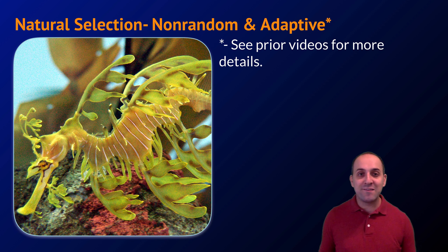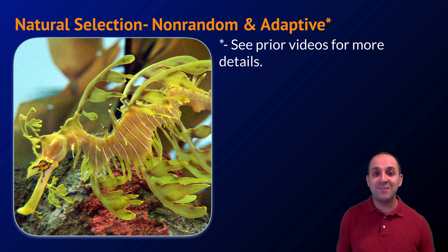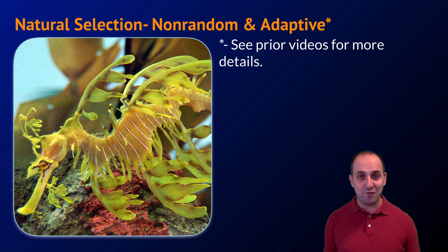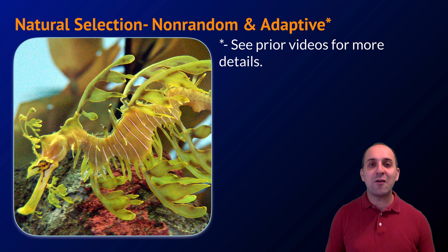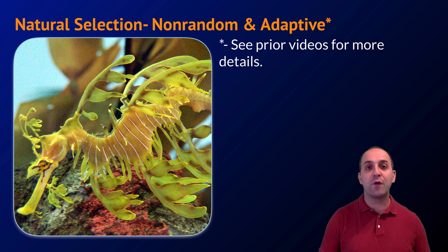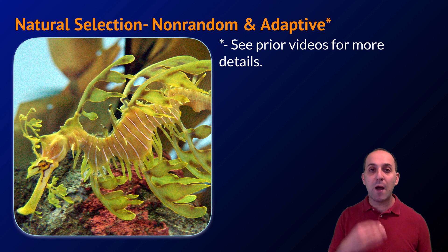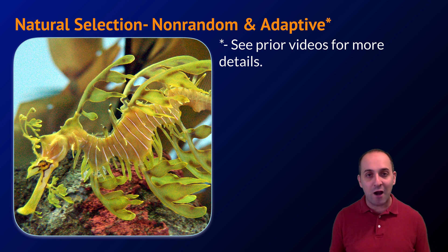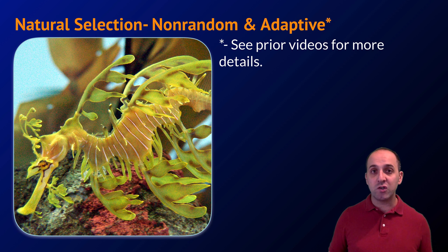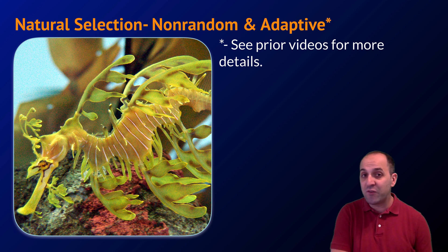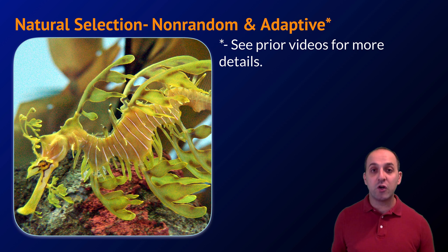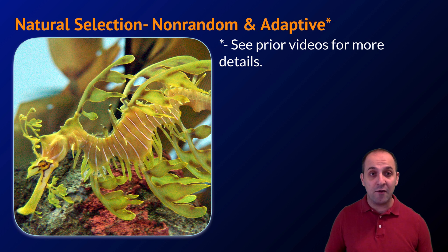Natural selection is best thought of as non-random and adaptive change. Natural selection is not driving random changes in the allele frequencies of the population; instead, it's pushing the population to become increasingly adapted for its environment from generation to generation. We've talked about natural selection almost exclusively to this point, so if you need more information, go back and review prior videos on the subject.